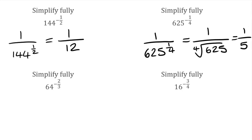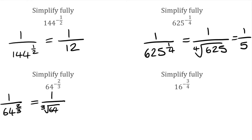For this next question, we have 64 to the power of negative 2 over 3. Because we have that negative, we can write this as 1 over 64 to the power of positive 2 over 3. We can simplify that down: we have 1 over — because we have a 3 on the bottom of that power, we're going to find the cube root of 64, which then we need to square. The cube root of 64 is 4, which then we need to square. So our final answer would be 1 over 16.